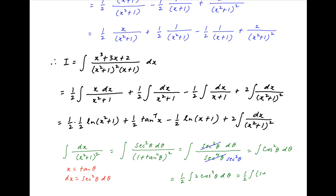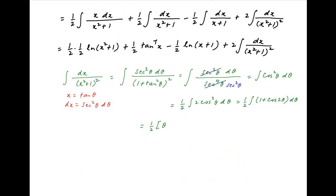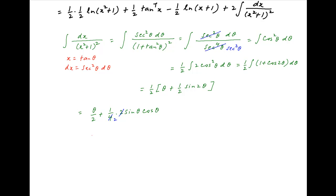This equals one-half of integral of (1 plus cos 2theta) d theta. Therefore the integral of dx over (x squared plus 1) squared equals one-half of (theta plus one-half sin 2theta), which equals theta over 2 plus one-fourth sin 2theta. Writing sin 2theta as 2 sin theta cos theta gives theta over 2 plus one-half sin theta cos theta.